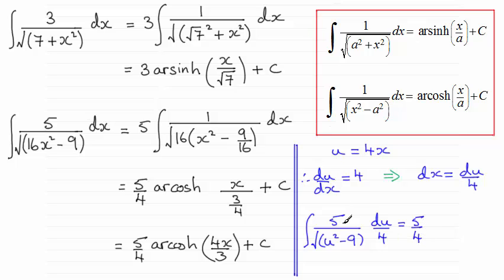And I can pull out 5 quarters being a constant over that integral. And so I've got the integral of 1 over the root of u squared minus 9 which is going to reduce down to arccosh of u over a, a being the root of 9 which is 3.